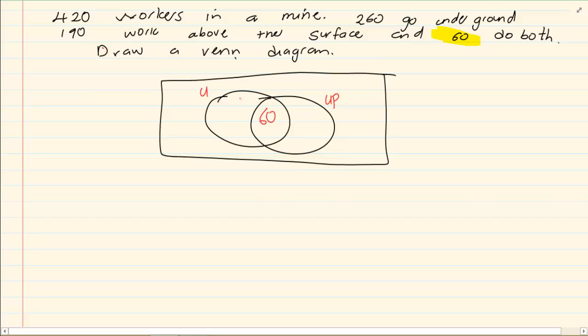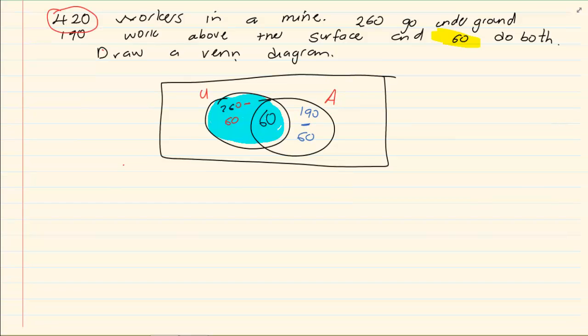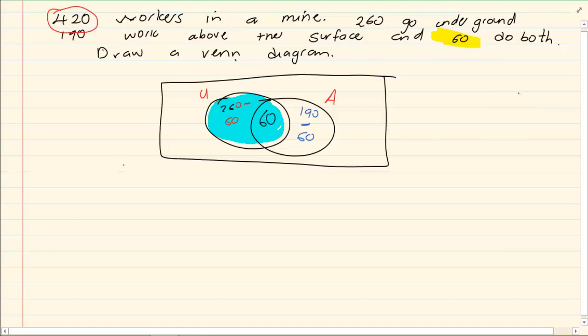To determine how many are underground, 260 go underground. It would be 260 minus the 60 that we already got, because underground would be the entire circle which includes the 60. Then if we say 190 is above, then we have 190 minus 60. We have that the undergrounds are 260 minus 60 which is 200. We have 60 that is in both, and then we have 190 minus 60 which is 130.